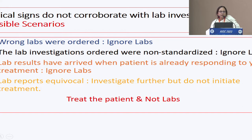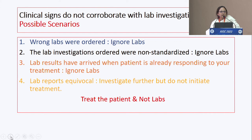For example, you have a patient who looks like toxoplasma, but somehow CMV titers were ordered from the blood. Now CMV comes positive. What will you do? Nothing — CMV was not even required. So just ignore the labs.